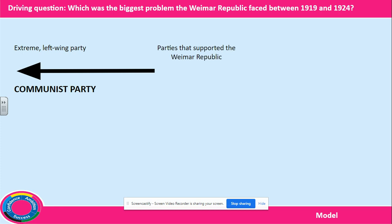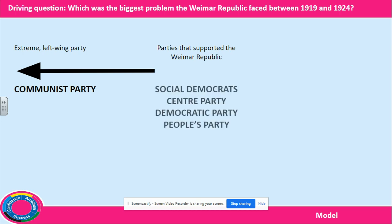Secondly, in the centre of politics were the parties that supported the Weimar Republic. The main party were the Social Democrats, who had lots of support, mainly from the working class. They wanted to help the country to return to normal after the First World War.